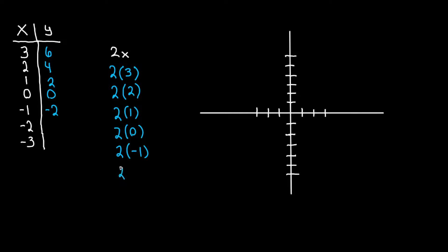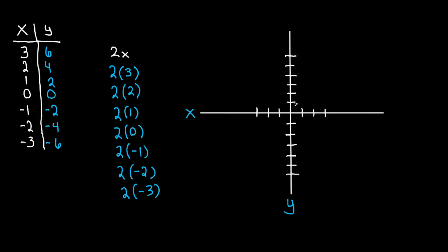If he borrows two dollars he's going to lose four dollars in the end. If he borrows three dollars, two times negative three is negative six — he loses six dollars. Now let's graph this. We have our x-axis going across and our y-axis going up and down.